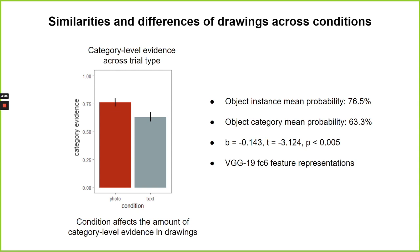To test this, we extracted feature representations of our sketches from pre-trained neural networks trained on natural images to extract high-level semantic features, and then we performed image classification on those features to get a recognizability metric. Essentially, it quantifies how much high-level evidence is in each sketch for being in their respective category. We found that indeed, sketches of object instances were more recognizable than sketches of object categories.